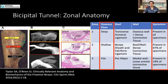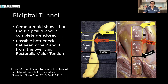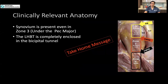There is synovium present even in a fair number of specimens in cadaveric studies down to zone two and even into zone three. The implication is that pathology involving the synovium can actually extend all the way down into zone three. It has also been shown in cement mold casting that the entire bicipital tunnel is completely enclosed, so whatever pathology happens in the tunnel tends to stay in the tunnel. There is also a possible bottleneck between zone two and three where the pec major tendon arches over the humerus, which can result in bottleneck problems as the tendon moves from zone two to zone three.